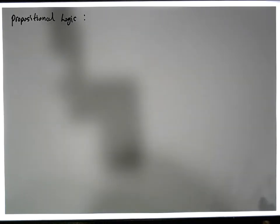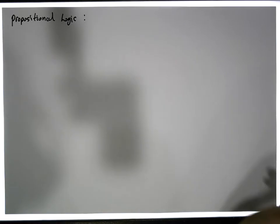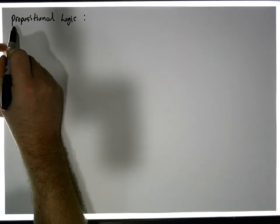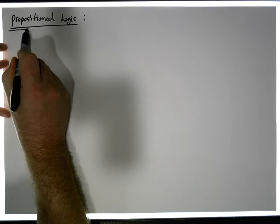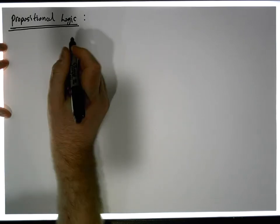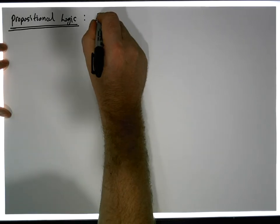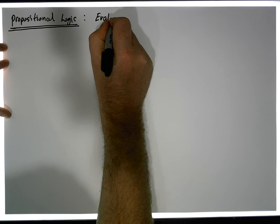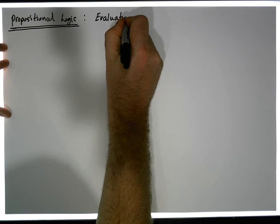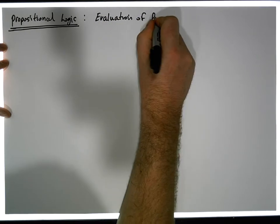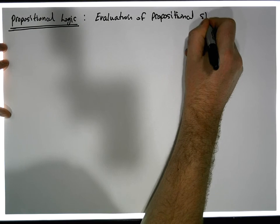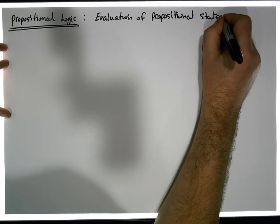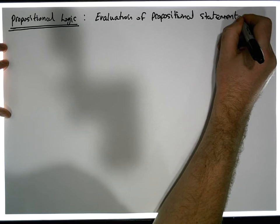Hi guys, this is Jonathan Lambert with the Mathematics Development and Support Service at the National College of Ireland. This short video — another in our series dealing with propositional logic — is going to deal with how to evaluate propositions, specifically the evaluation of propositional statements given specific truth values for the propositions.